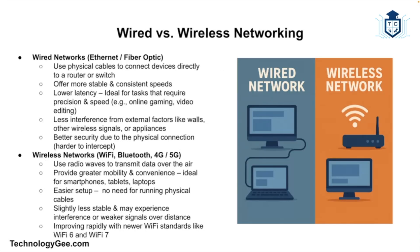There are two main ways to connect a network. Wired networks use Ethernet or fiber optic cables — they're more stable, have faster speeds, and are ideal for offices, gaming, or video editing setups. Wireless networks use radio waves like Wi-Fi, Bluetooth, 4G, and 5G — more convenient and mobile, but slightly less stable, though constantly improving. Most modern homes use a hybrid setup: Ethernet for desktops and Wi-Fi for pretty much everything else.